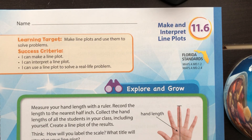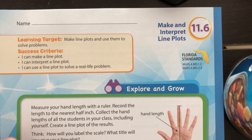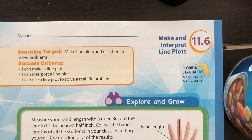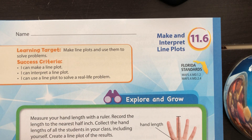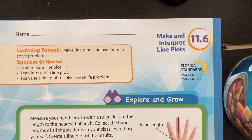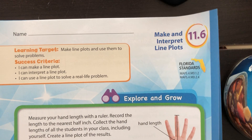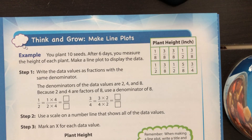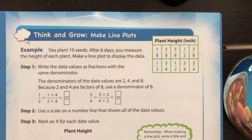Good morning, everybody. Welcome to our first lesson in fourth grade math. We are doing make and interpret line plots. This is lesson 11.6 and can be found on page 537 of your book. Like we do sometimes in class, we're actually going to go from this front page to the second page to start talking about examples right away.